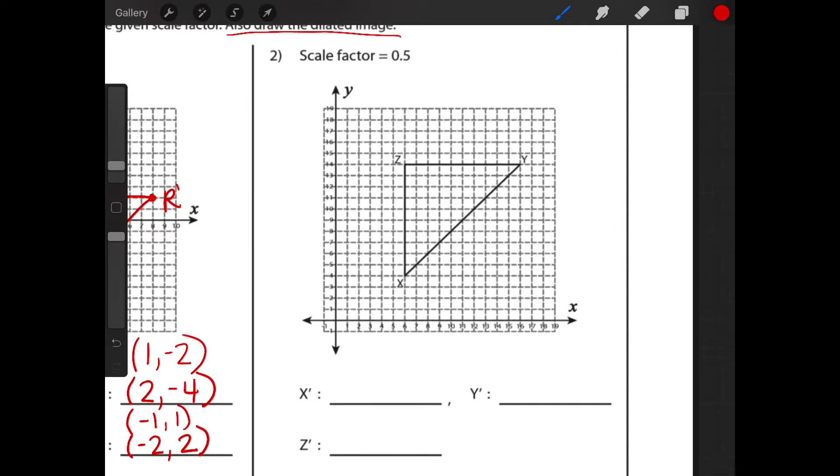Okay. So number two, I want to check first. I identify that 0.5 is a scale factor that is going to reduce our triangle because 0.5 is less than one. And hopefully we've learned at this point that if you multiply by one, the image stays the same. If you multiply by less than one, the image is going to get smaller. It's going to reduce. So knowing that will help get me in the mindset that my triangle should be smaller at this point.